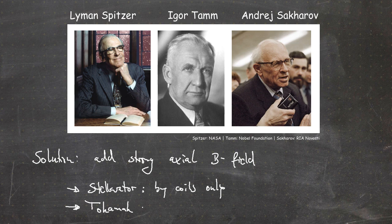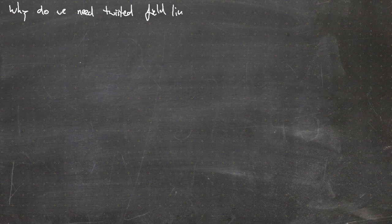The tokamak is also based on a magnetic field produced by induction. The additional strong axial magnetic field results in twisted magnetic field lines. Now why do we need twisted magnetic field lines? Let's look at what would happen if we did not have them by drawing a cross section.